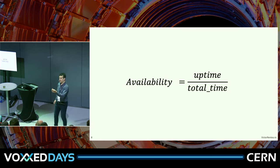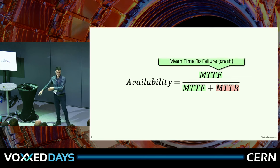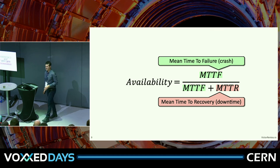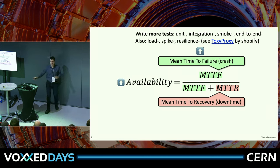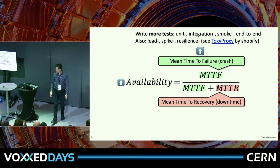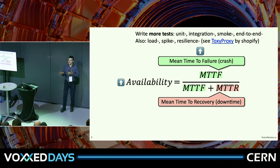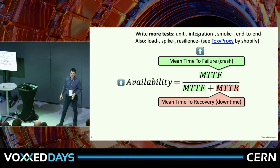Availability is the proportion of time you are serving requests divided by the total time — the mean time to failure divided by that plus the time it takes to recover. We can improve this by failing less frequently through more testing: unit tests, integration tests, end-to-end smoke tests. But many teams don't see load tests, spike tests, and resilience tests as immediate requirements. Toxiproxy, a beautiful piece from Spotify, can introduce network failures randomly and delay traffic between your service and Postgres.